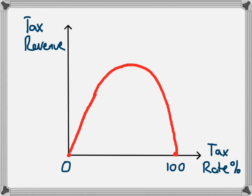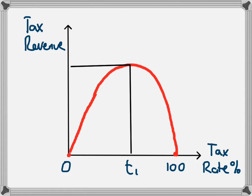The exact shape of the curve will depend on how hard people are willing to work even if tax rates are rising, or how easily they'll substitute their labour for leisure as the tax rate rises. We'll end up with an optimal tax rate, which we'll call T1. At T1, the government will receive the maximum amount of revenue.